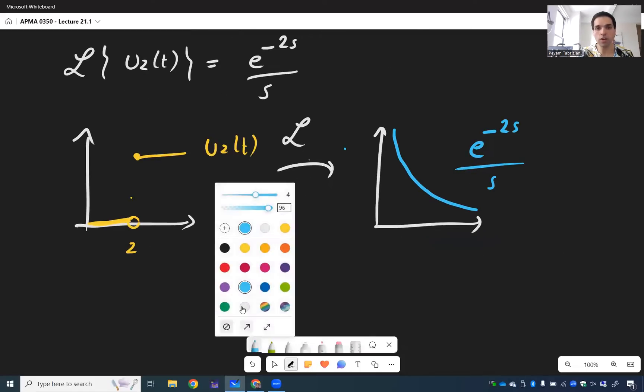So the main thing to remember here is the following fact that the Laplace transform of a jump at C is E to the minus 2S over S. And in the next video, we will see how to describe jump processes using this Heaviside function.